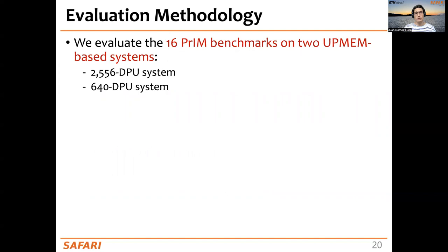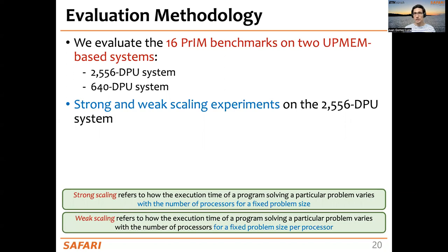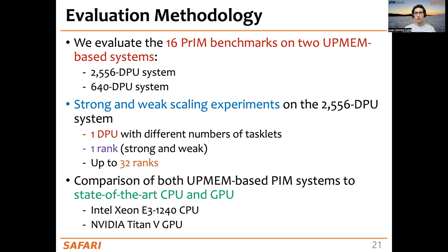In our evaluation methodology, we evaluate the 16 PIM benchmarks on two UPMEM-based PIM systems, focusing more on the larger one with more than 2,500 DPUs for strong and weak scaling experiments. Strong scaling refers to how execution time varies with the number of processors for a fixed problem size, while weak scaling refers to how execution time varies with the number of processors for a fixed problem size per processor. We perform strong scaling experiments on one DPU, strong and weak scaling on one rank, and strong scaling on up to 32 ranks.